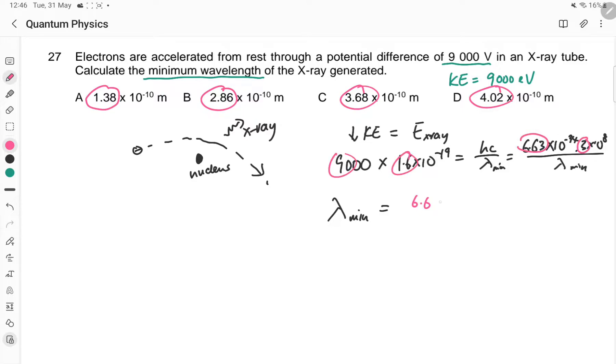So I have 6.63 times 3 divided by a 9 and a 1.6. That would be good enough. And the answer I will get will be 1.38. I don't know the power, but I know answer must be A.